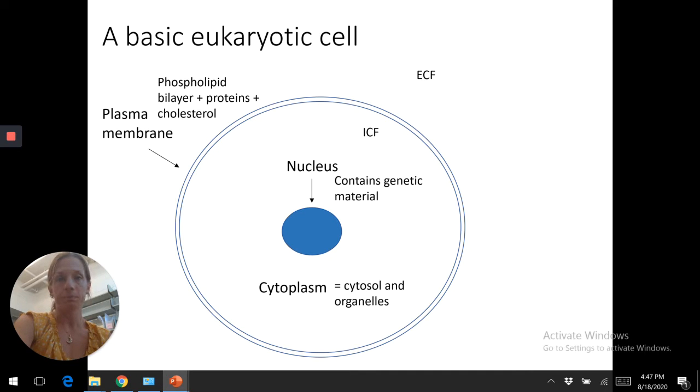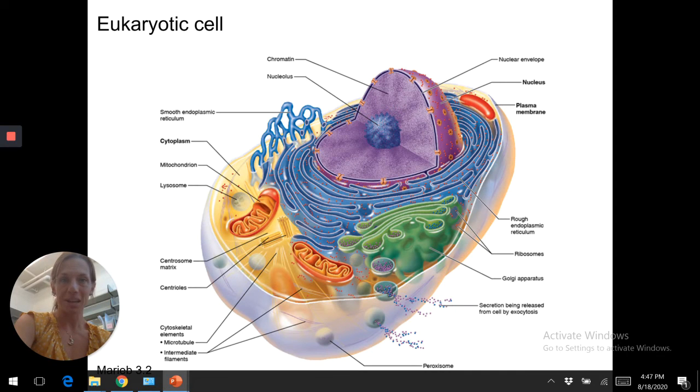Here's the basic cell. Here is the complicated cell. A whole lot more going on here. We still have the same structure: plasma membrane, nucleus containing chromatin—that's the packaged DNA—and the nucleolus. All this stuff in here is the cytoplasm. The cytosol is the aqueous solution in between all of the organelles. All these organelles are shown here. I'm going to highlight a few.